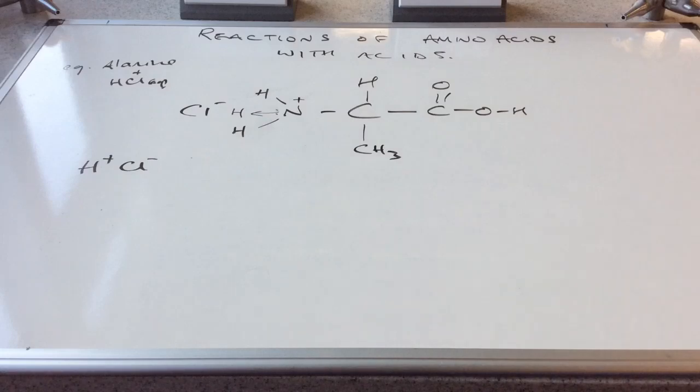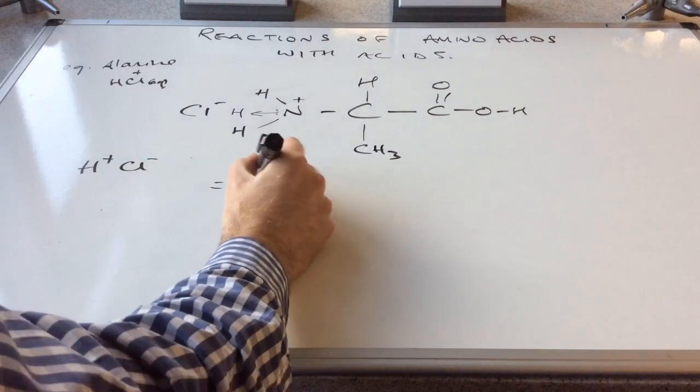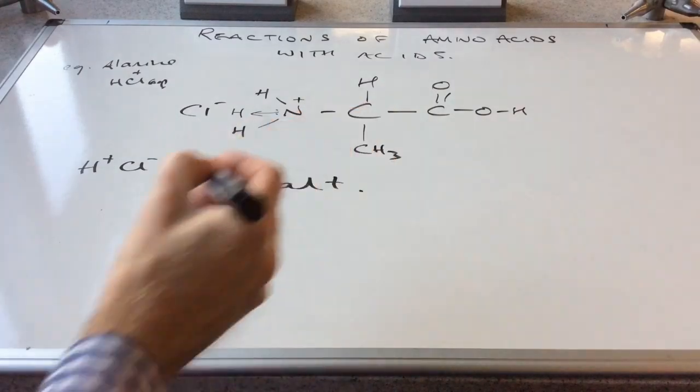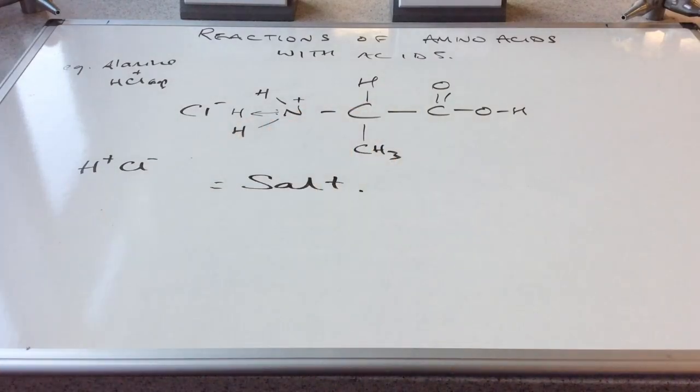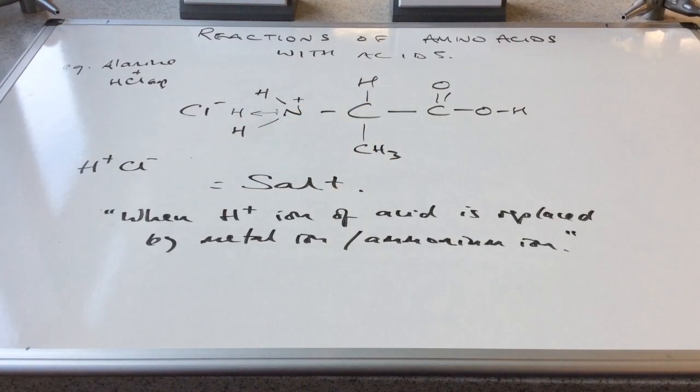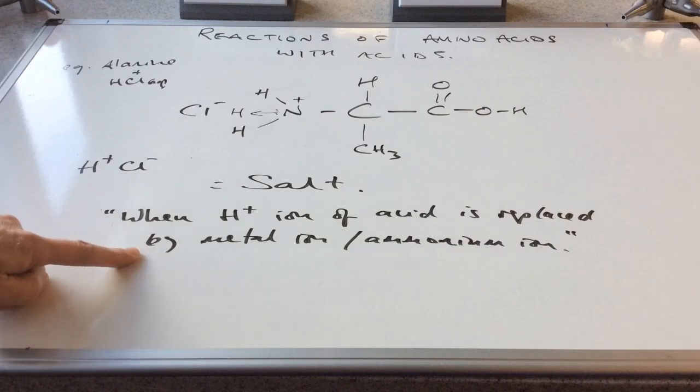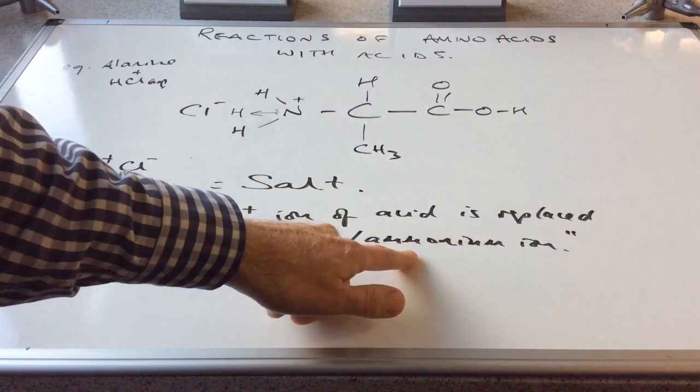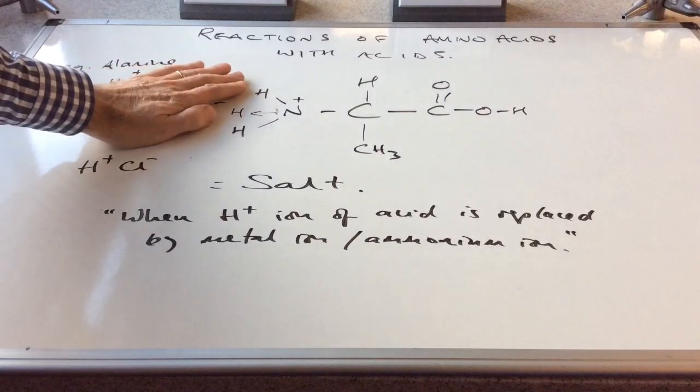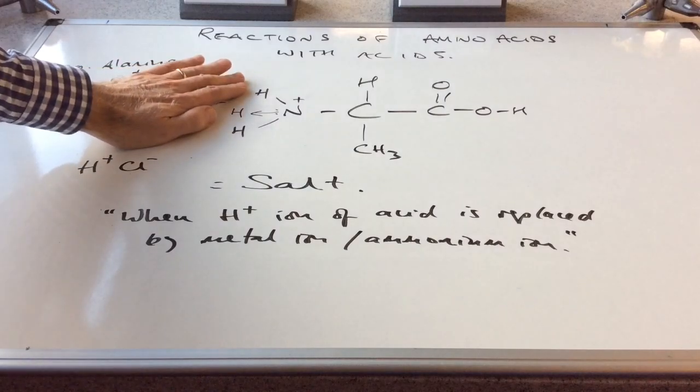So that is actually a salt. We'll just think well why is that classed as a salt. You can see I've written up the definition of salt on the board there. So that's when the H+ ion of an acid is replaced by a metal ion or an ammonium ion. So if I just cover the Cl- ion for a moment, this is actually an ammonium ion.